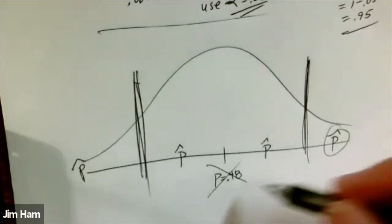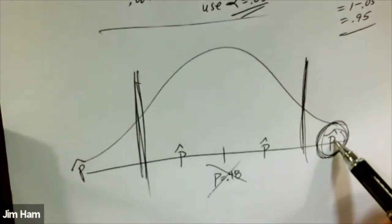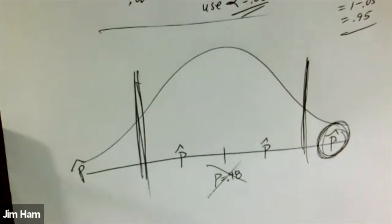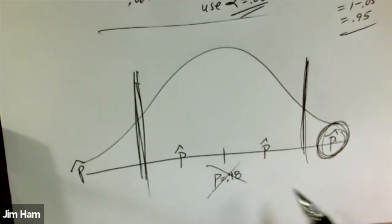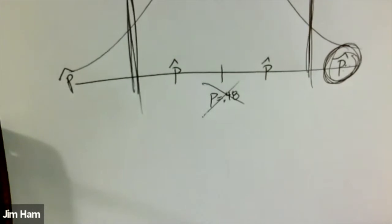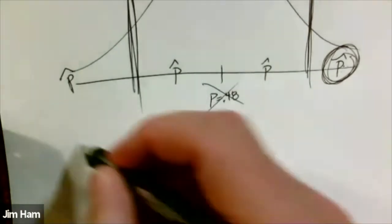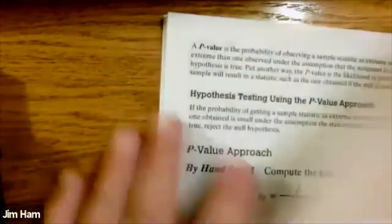If we reject the claim because our sample proportion fell out in the tail, but that result was just based on random sampling variation and the true population proportion really was 0.48, we could make an error — rejecting the claim when in fact it's true. That's one of the errors we can make; we just want that error to be very small. There are two kinds of errors: type 1 error and type 2 error.